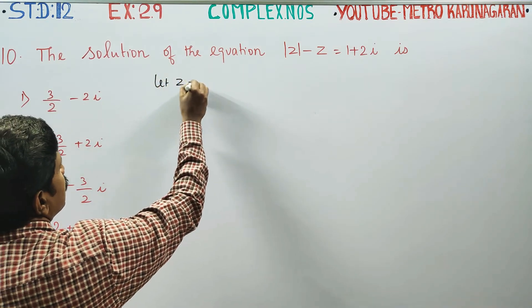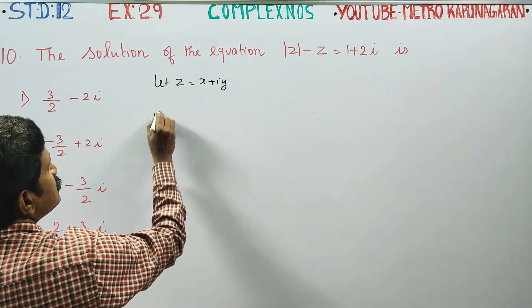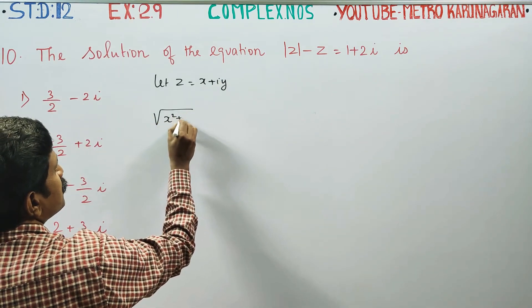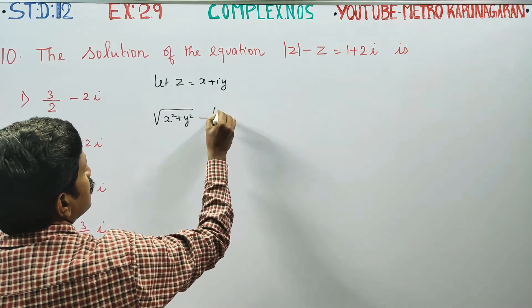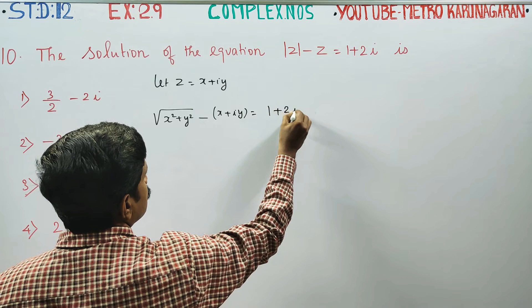Let z equal x plus iy. For modulus of z, you can write the square root of x square plus y square. Minus z, x plus iy, is equal to 1 plus 2i.